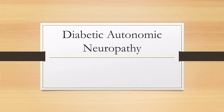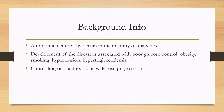Let's talk about diabetic autonomic neuropathy. This is a disease process that occurs in the majority of diabetics, and development of the disease is associated with poor glucose control, obesity, smoking, hypertension, and triglyceridemia. Controlling these risk factors reduces the progression of the disease and is the mainstay of treatment.